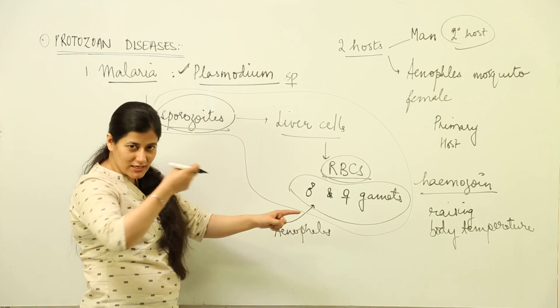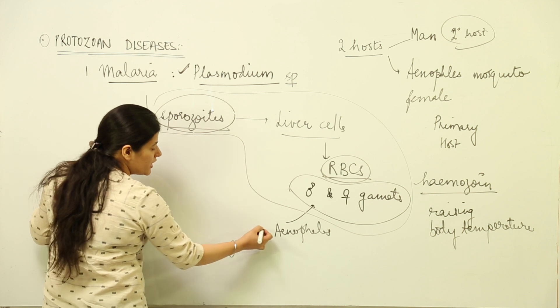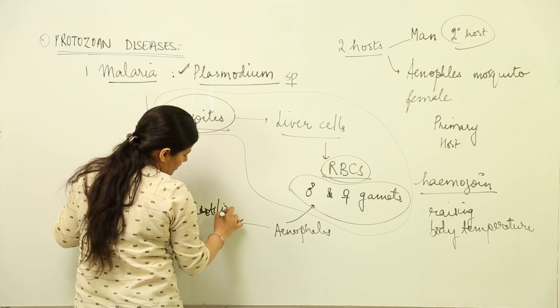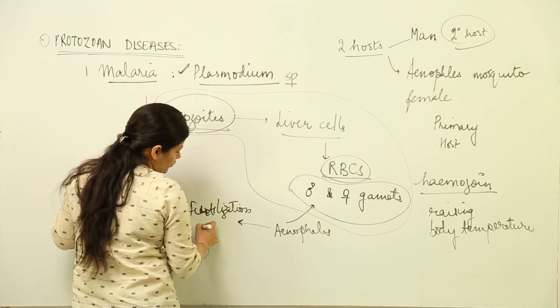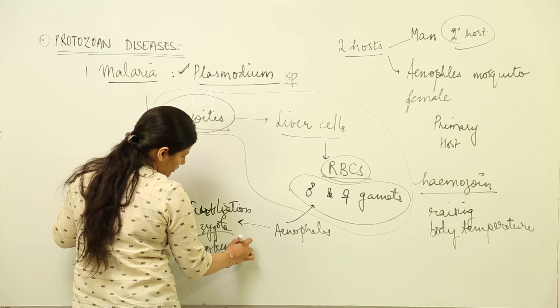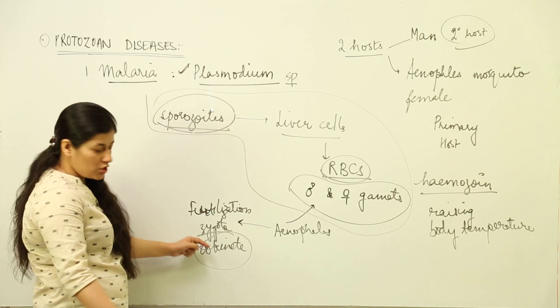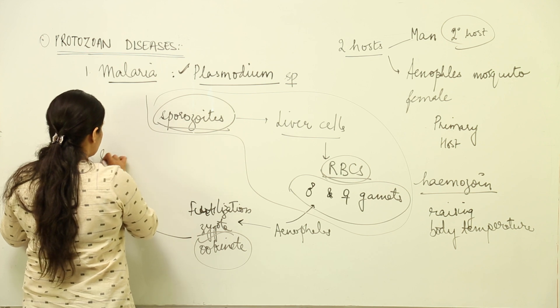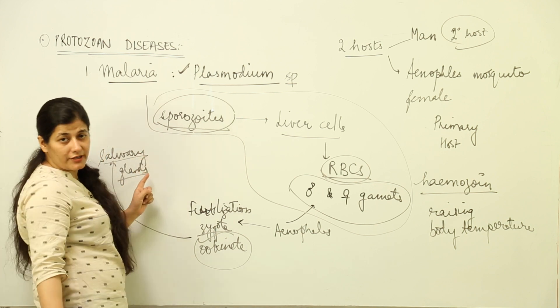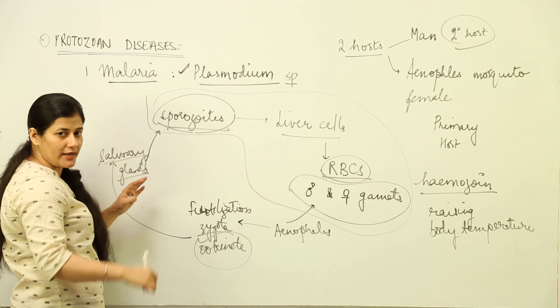The mosquito takes up the blood, and inside its gut go the male and female gametes. Inside the gut of Anopheles, fertilization takes place, resulting in the formation of a zygote. It forms a stage known as ookinete inside the lining of the digestive system. This ookinete moves towards the salivary glands of Anopheles.